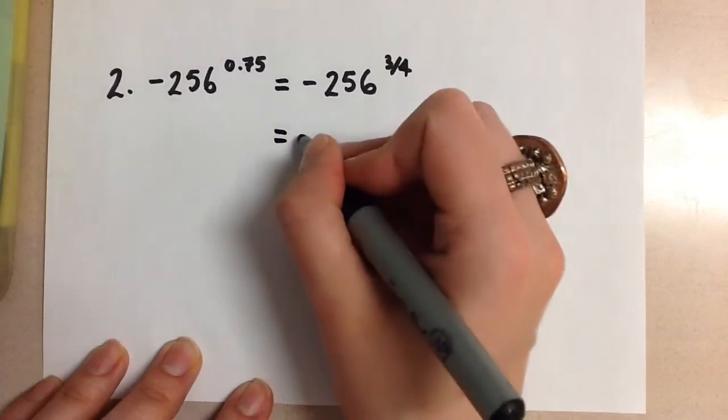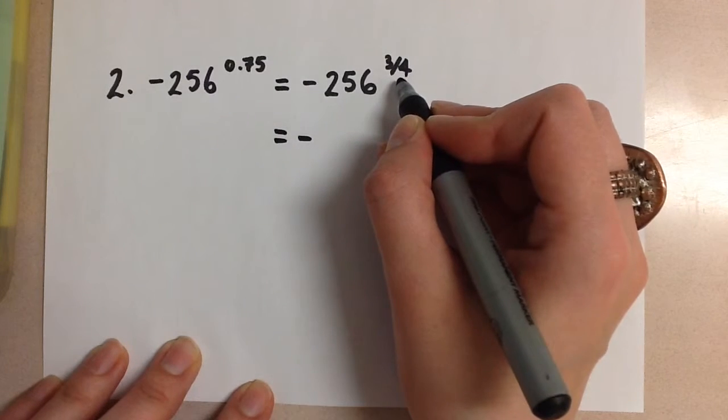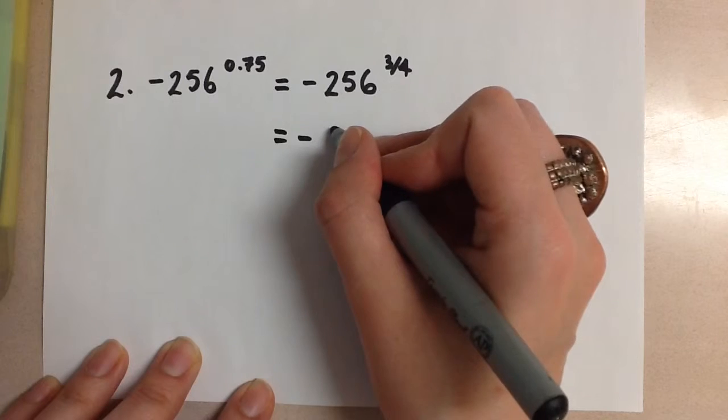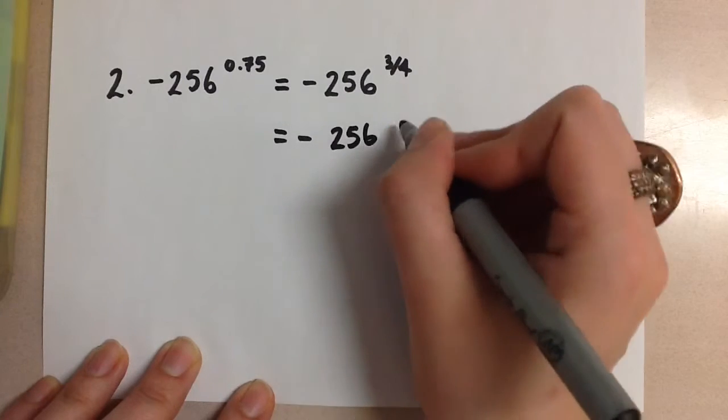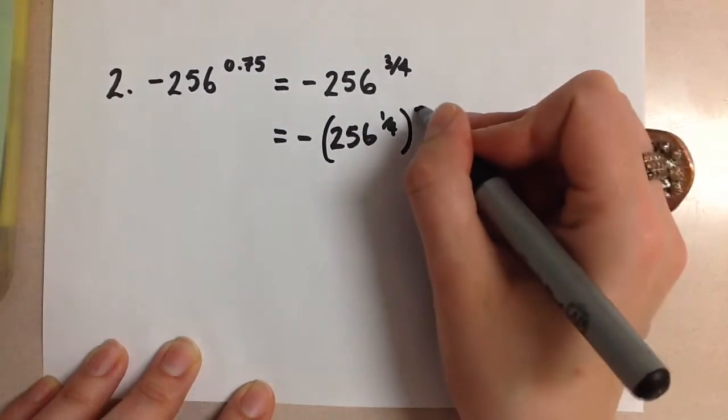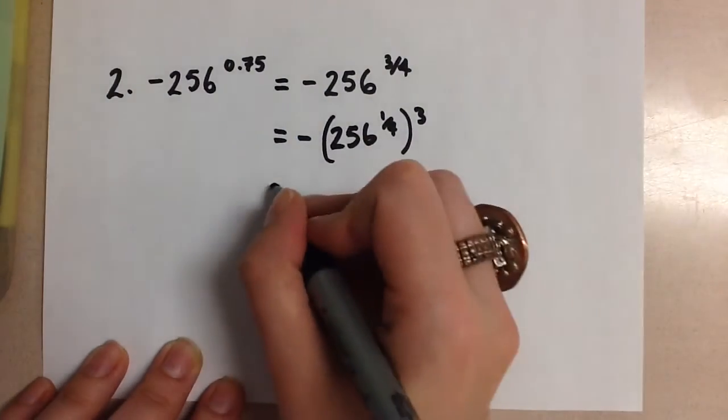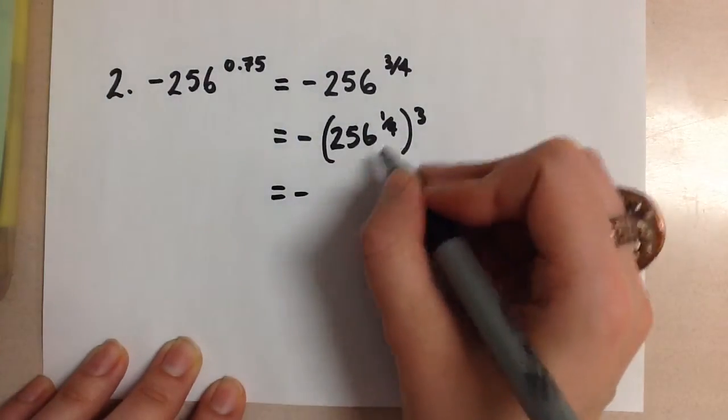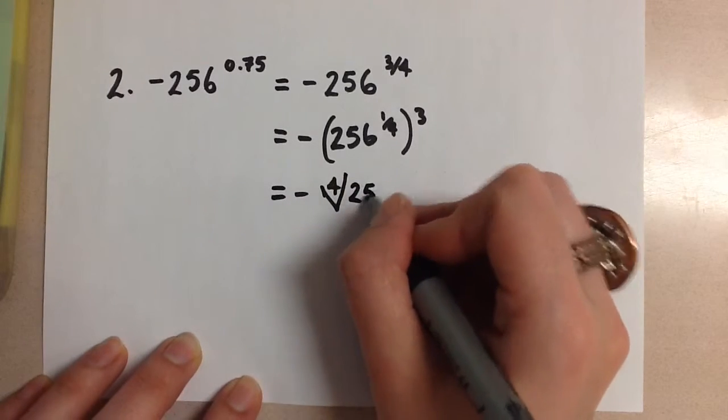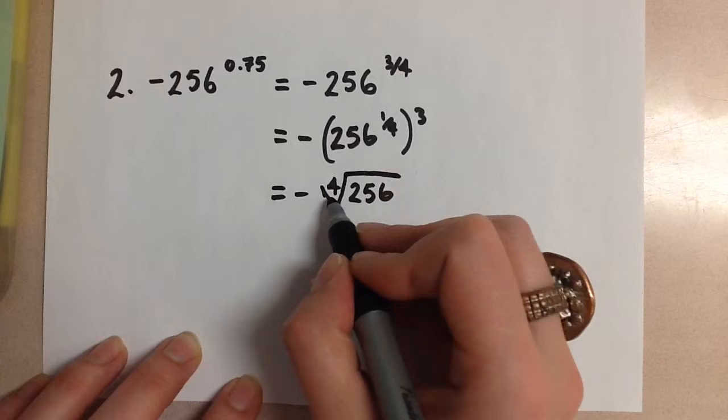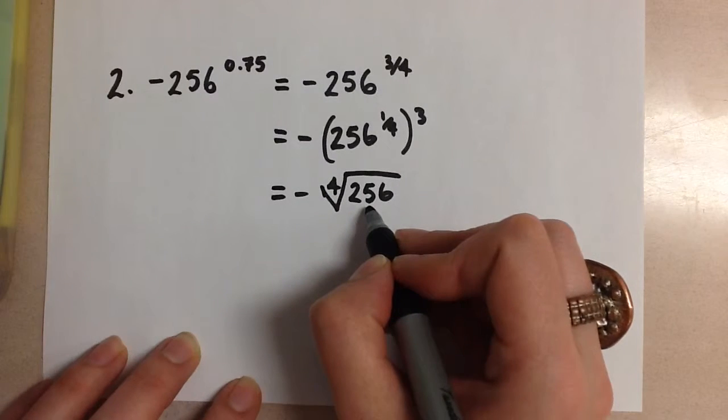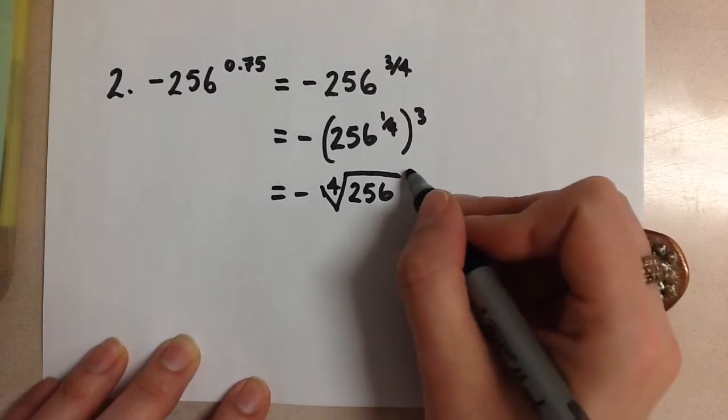Now we're going to break down this exponent using the power of a power rule like we did before. This is going to be 256 to the power of 1/4 to the power of 3. Let's change this to a radical and we get the fourth root of 256. Now that root is an even number, but we have a positive number under the radical, so we're okay to proceed.